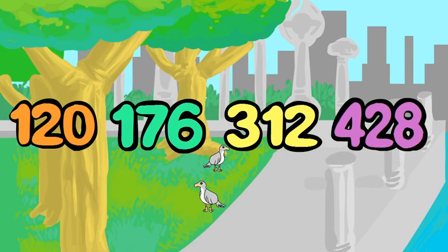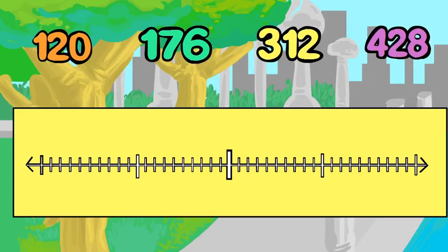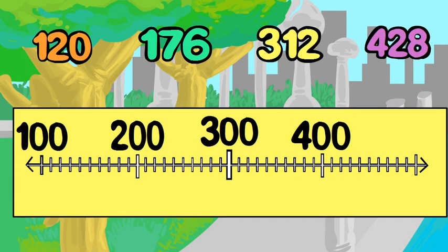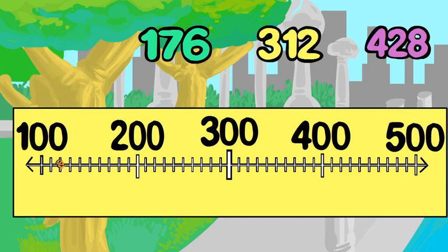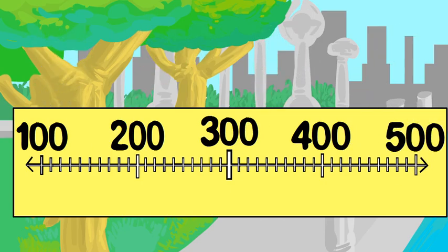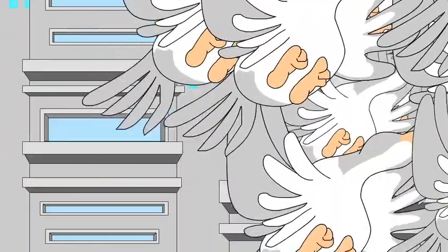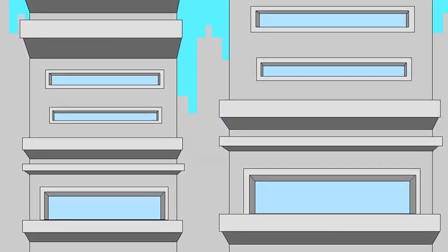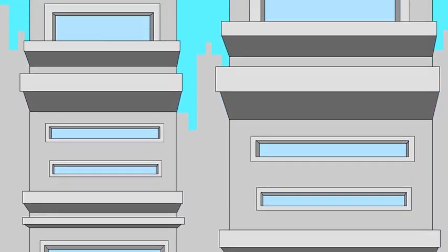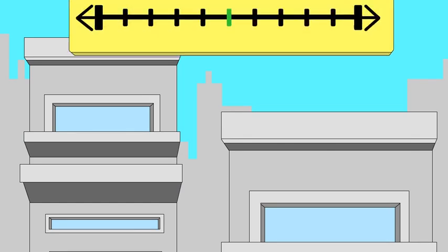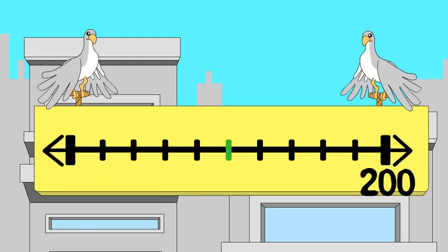Rounding might look hard, but if you know how to put numbers in order and can skip count by hundreds, you can learn to round any number to the nearest hundred with ease. Here are some useful things to know: you can show any number on a number line.